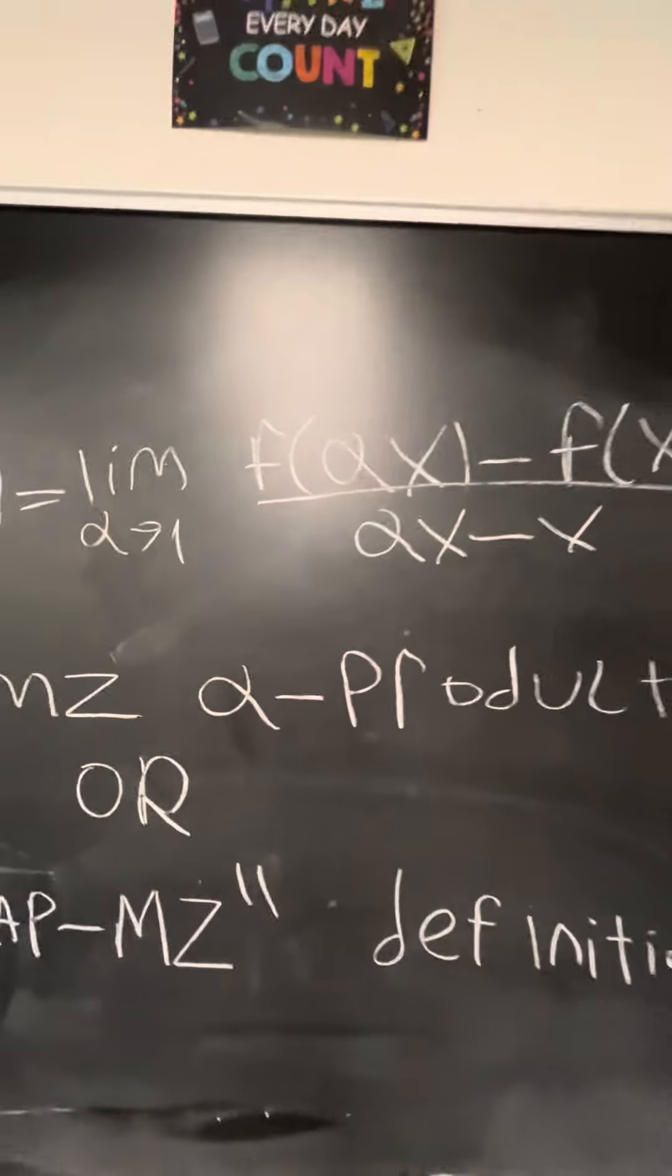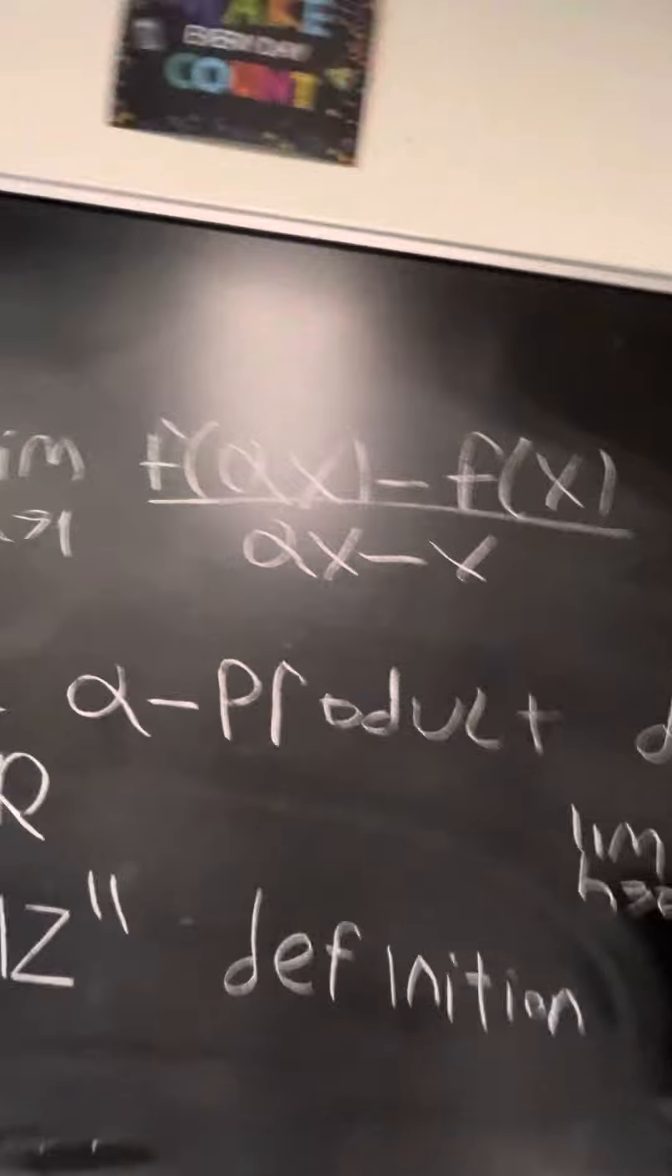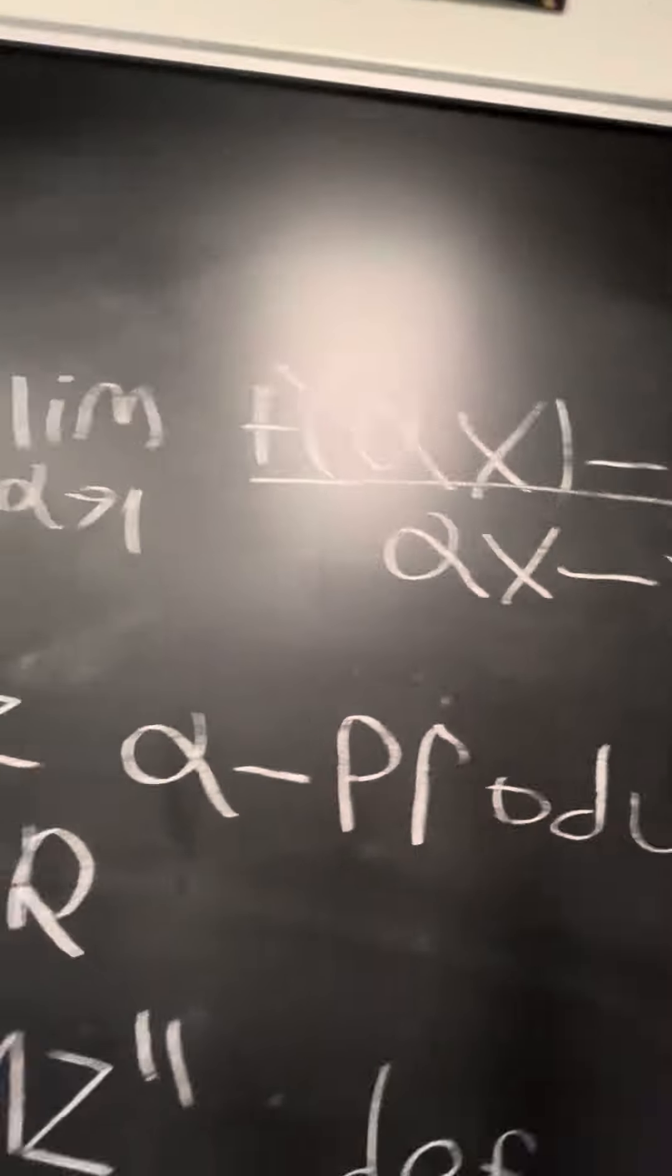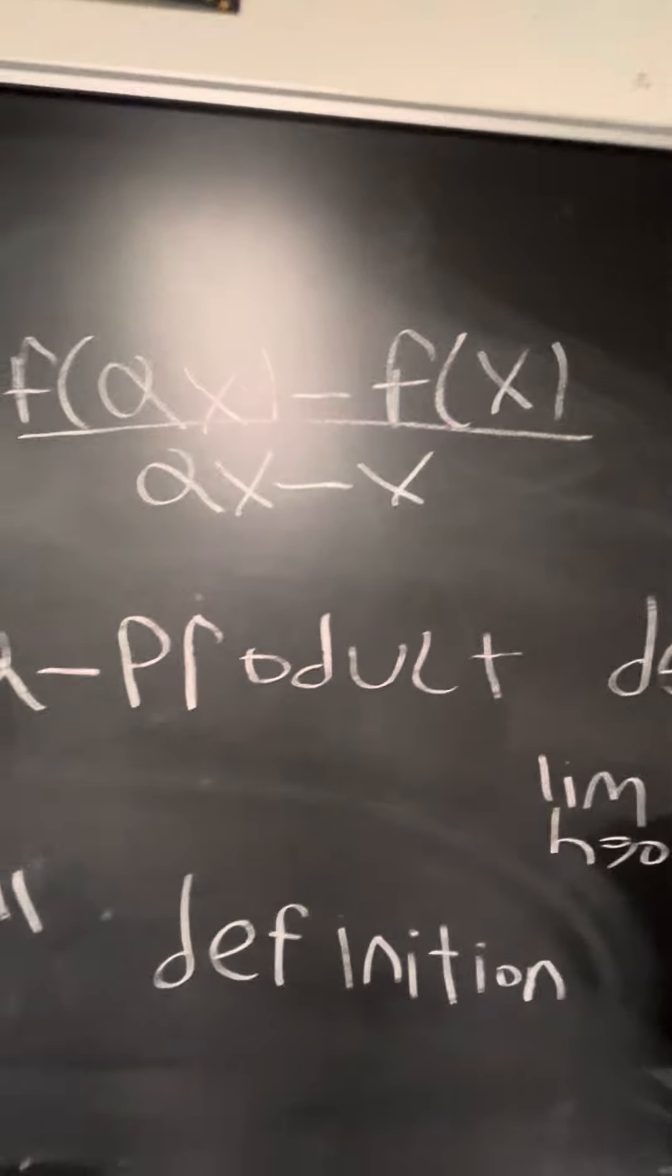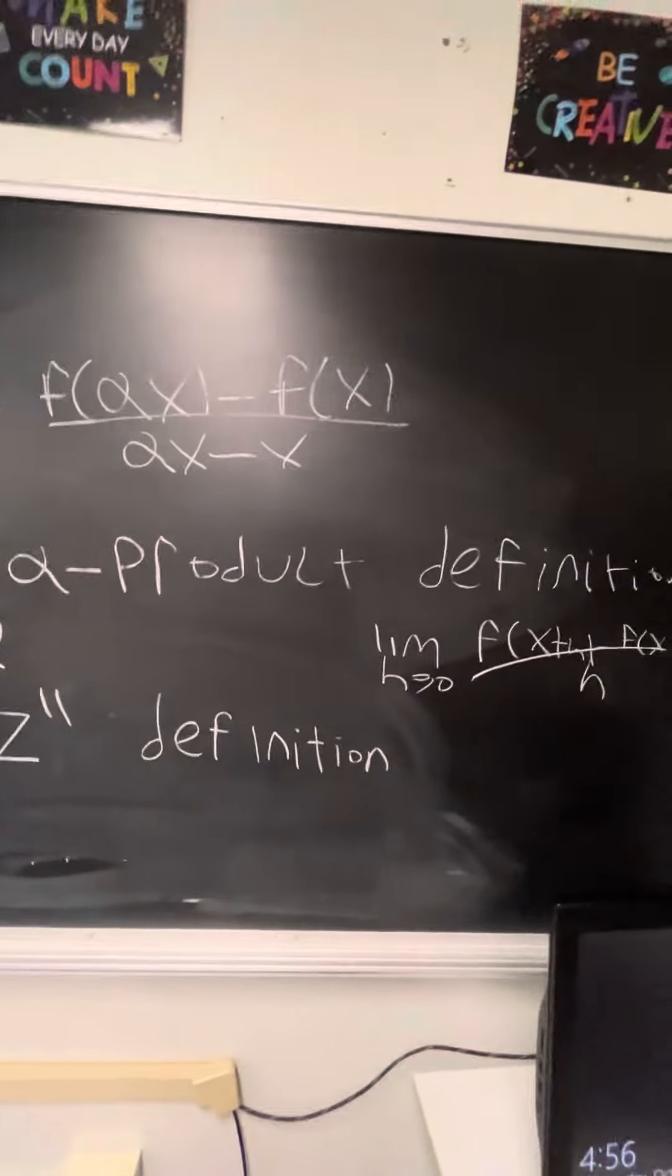We just do, instead of the limit as h approaches 0, we use alpha to be different. We do the limit as alpha approaches 1 of f of alpha x minus f of x over alpha x minus x.